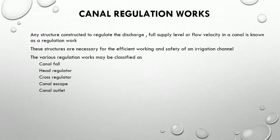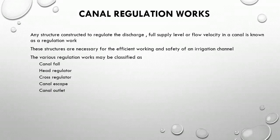Any structure constructed to regulate the discharge, full supply level, or flow velocity in a canal is known as a regulation work. These structures are necessary for the efficient working and safety of an irrigation channel. The various regulation works may be classified as canal fall, head regulator, cross regulator, canal escape, and canal outlet.